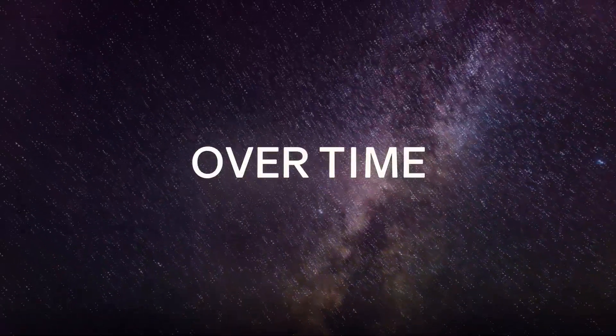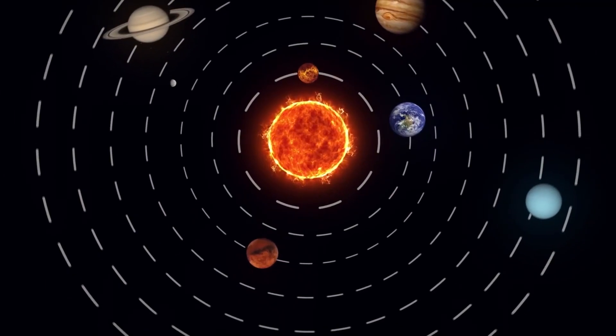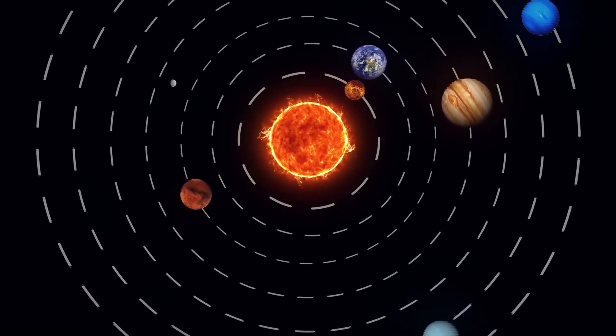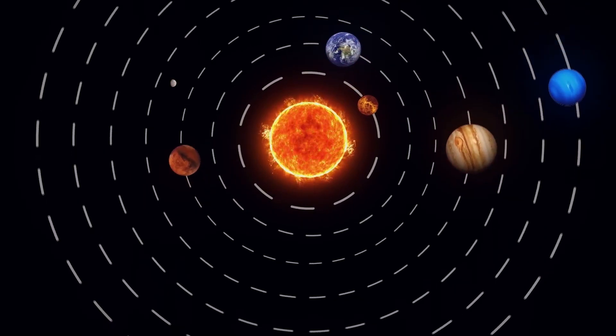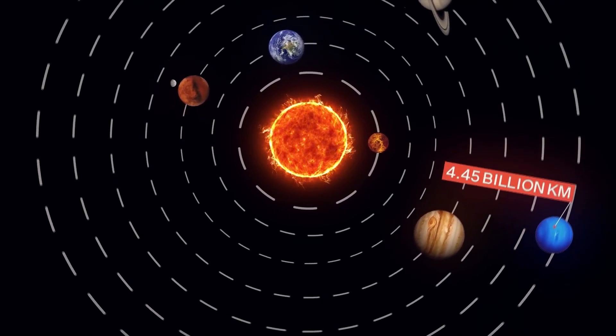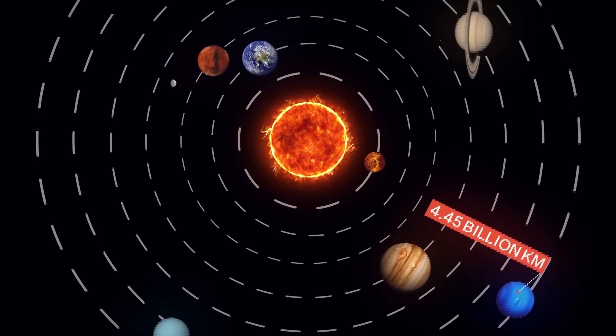The structure of the solar system after the opening of the local bubble looks like this. The Sun is at the center, and 8 planets orbit it. Neptune is the last one, at a distance of 4.45 billion kilometers or 30 astronomical units. That is, 30 times the distance between Earth and the Sun.